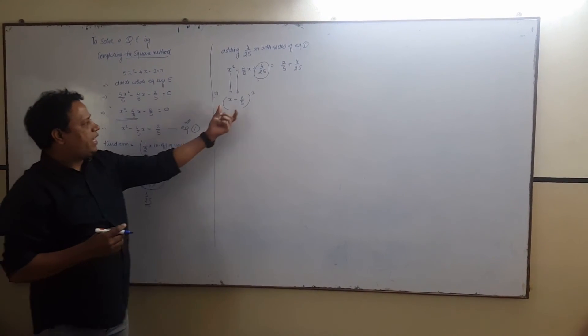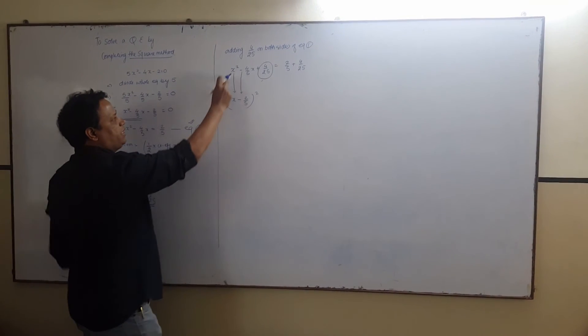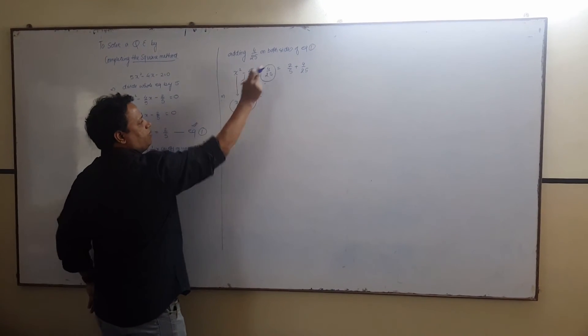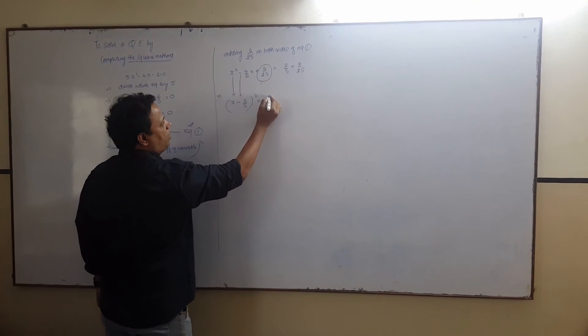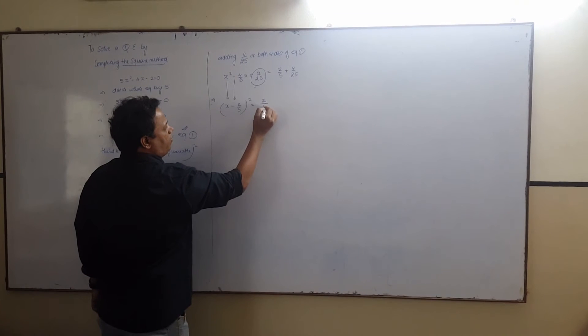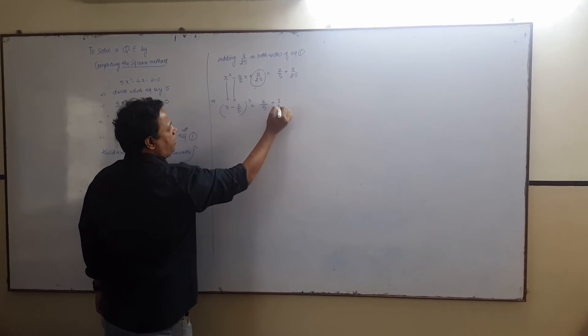If you are solving this identity, you are going to get the same answer. That is, a square minus 2ab plus b square equals to 2 upon 5 plus 4 upon 25.